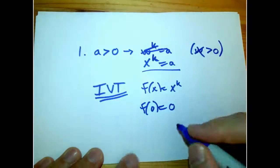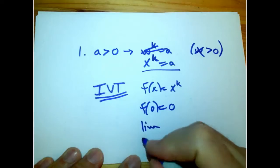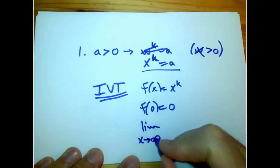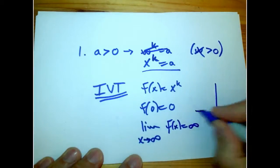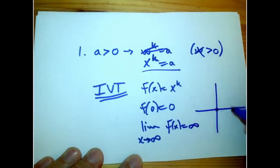We have the function f(x) equals x^k. It starts out at zero. And the limit, as x goes to infinity of f(x), is infinity. So no matter what it looks like exactly, depending on what power it is, it's going to start out like that. That means it's going to hit a at some point.